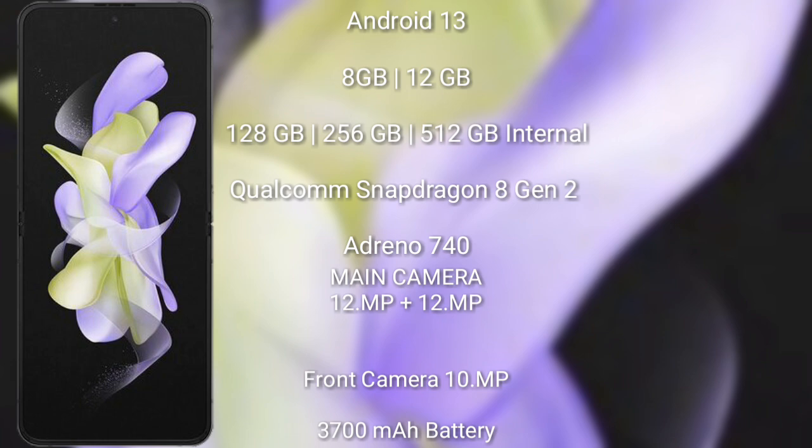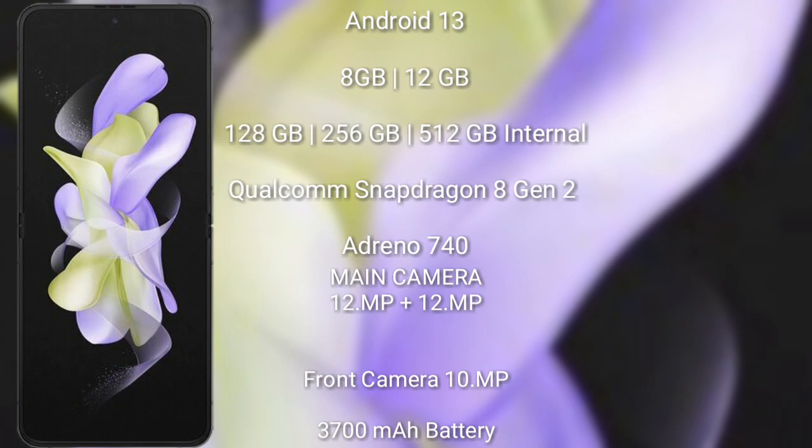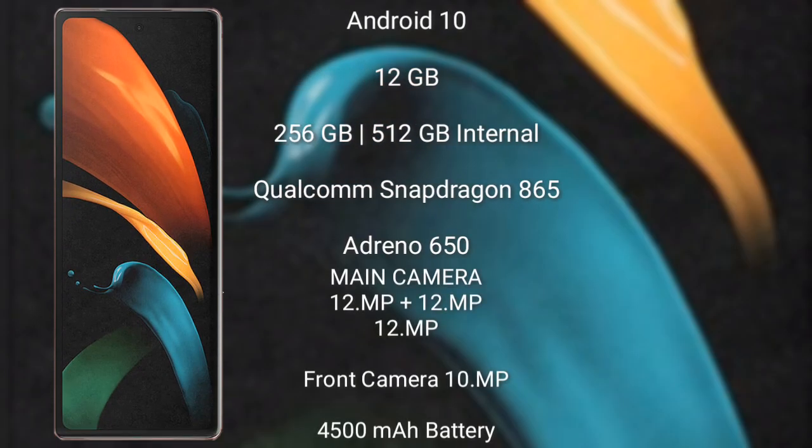The Samsung Galaxy Z Flip 5 has a rear dual-camera setup of 12MP plus 12MP, and a front camera of 10MP. It has a 3700mAh battery with 25W fast charging support. The Samsung Galaxy Z Fold 2 runs on the Android 10 operating system.